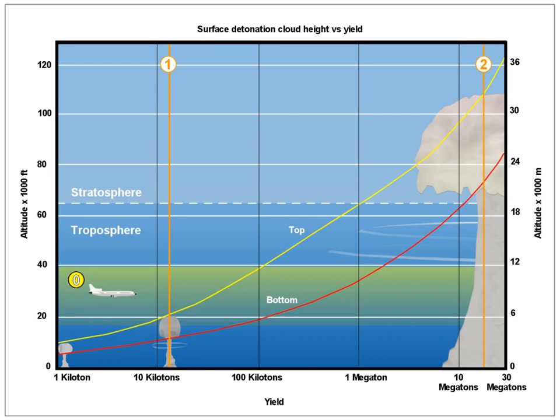TNT equivalent is a convention for expressing energy, typically used to describe the energy released in an explosion. The 'ton of TNT' is a unit of energy defined by that convention to be 4.184 GJ, which is the approximate energy released in the detonation of a metric ton of TNT. For each gram of TNT exploded, 4,184 J of energy are released. This convention intends to compare the destructiveness of an event with that of traditional explosive materials, of which TNT is a typical example, although other conventional explosives such as dynamite contain more energy.